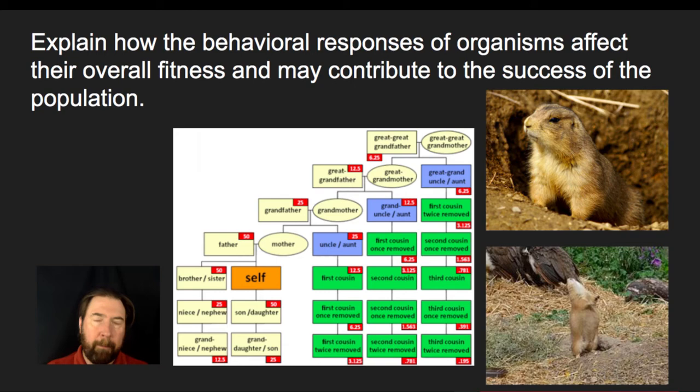This behavior, if warning all of the other members of their population, actually helps through an altruistic behavior, the other members of the population survive, possibly leading to a fraction of their genes getting passed on to that next generation. This could be a way that they can cooperate and share the responsibility of protecting genes, even if it's not their individual ability to survive and reproduce, the population's genes will be passed on to that next generation.